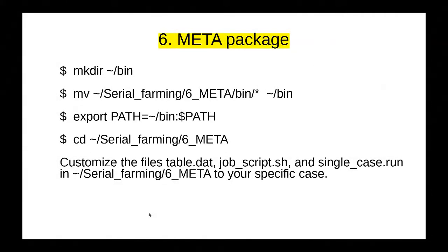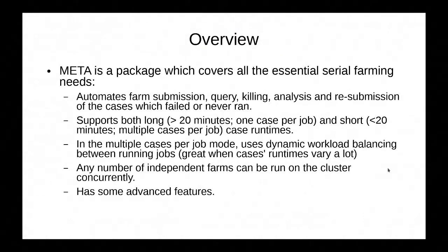Here's the final example for today: the Meta package. It has multiple commands or scripts. The convenient way to use it is to create a bin subdirectory in your home directory, move all the scripts from the 6_meta/bin folder to your bin directory, and make sure it is on your PATH variable. Then go inside the 6_meta farming example directory, where you will see three files to customize: the usual table.dat, also job_script.sh, and single_case_run — which you may or may not need to customize. This is a full-featured serial farming package which covers all the essential needs: it automates farm submission, query, killing, analysis, and resubmission of cases which failed or never ran.